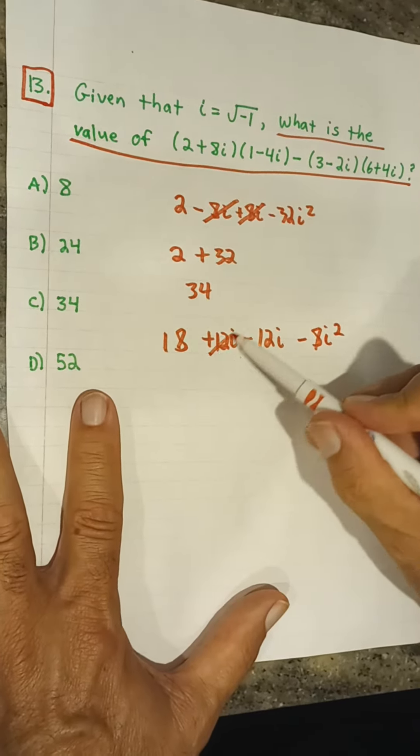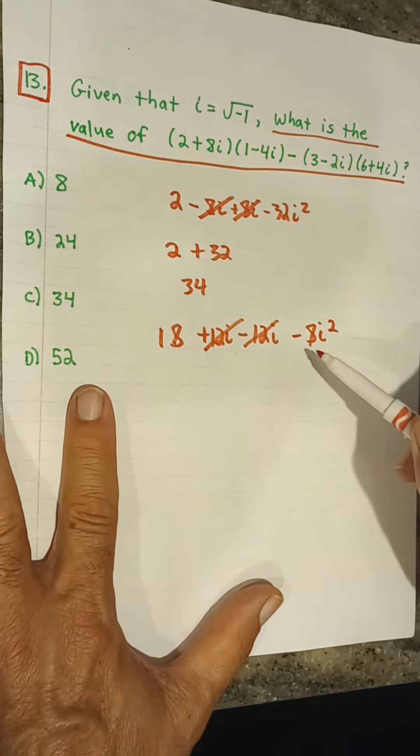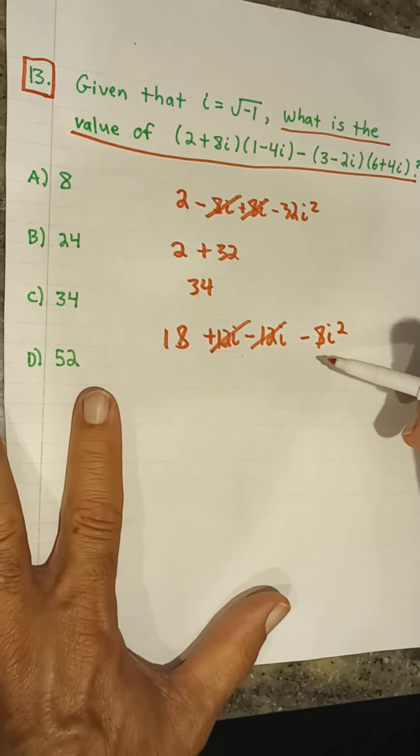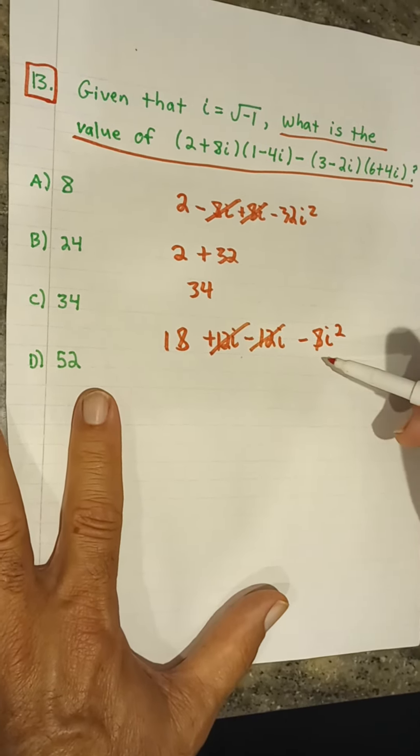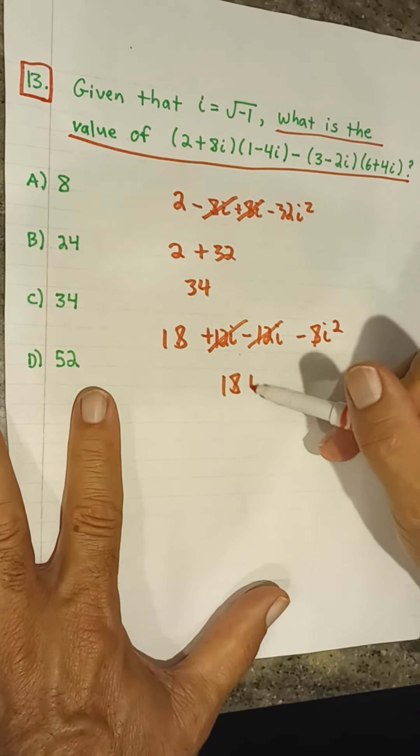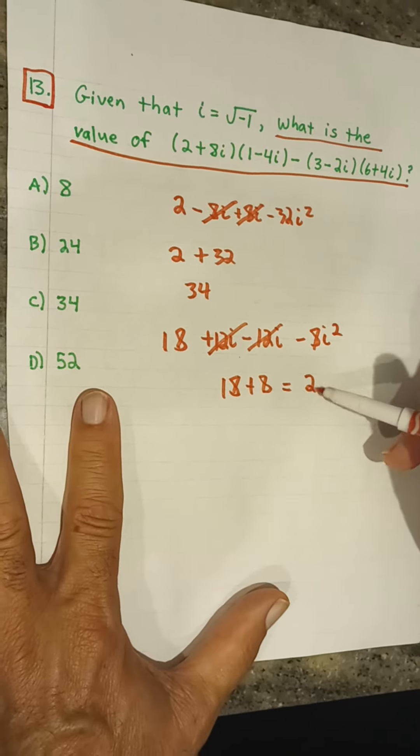Once again, our outside and inside terms cancel. And we have 18 minus 8i squared. Again, i squared is negative 1. So we have negative 8 times negative 1, which is positive 8. So we have 18 plus 8 over here, which equals 26.